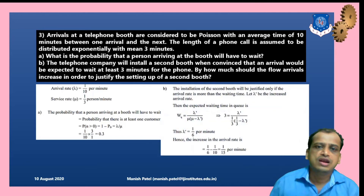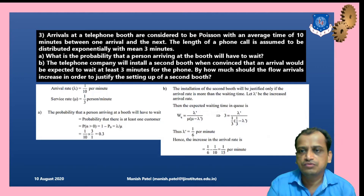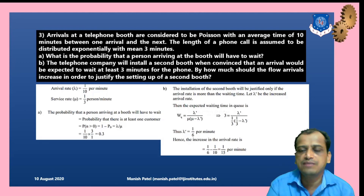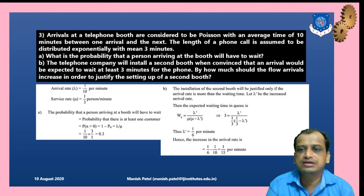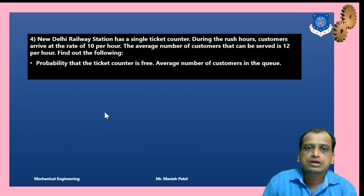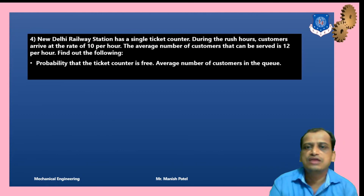Installation of a second booth is justified only if the arrival rate increases such that the waiting time in the queue reaches 3 minutes. Let λ' be the increased arrival rate. The expected waiting time in the queue is Wq = λ'/[μ(μ − λ')]. Setting Wq = 3 minutes and solving gives λ' = 1/6 per minute. The increase in arrival rate is 1/6 − 1/10 = 1/15 per minute.